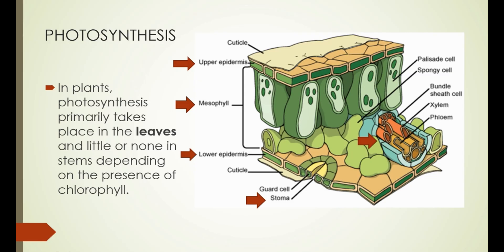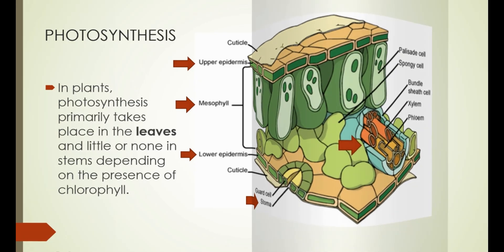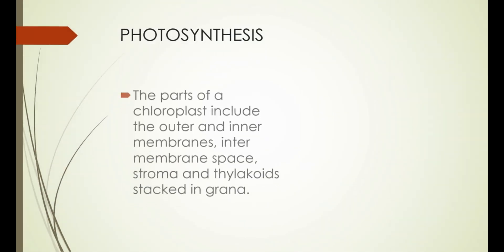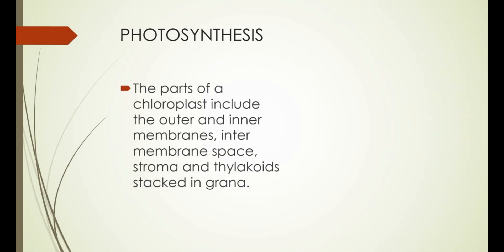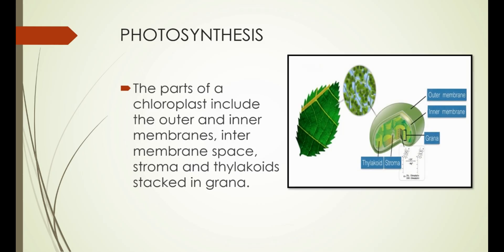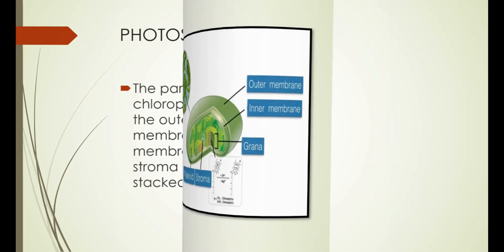The parts of a chloroplast include the outer and inner membranes, intermembrane space, stroma, and thylakoids stacked in grana.